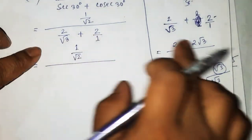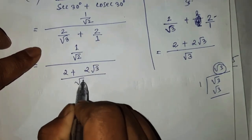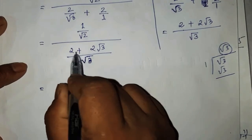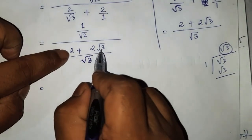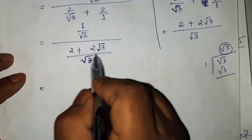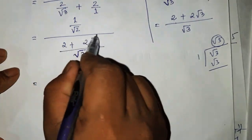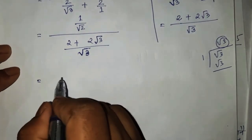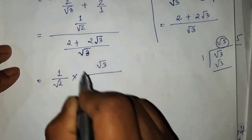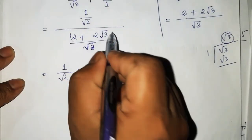This is 2 plus 2 root 3 divided by root 3. This is the plus column. For the first step, it is divided and multiplied by root points. In the previous step, the first place is 2 plus 2 is 3. That is the second place.